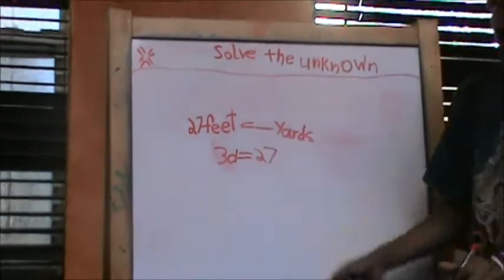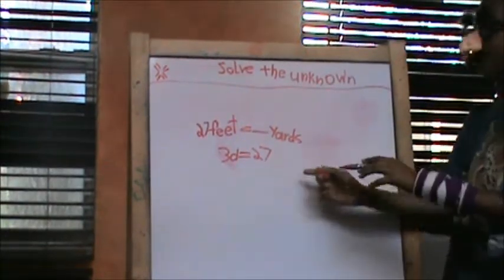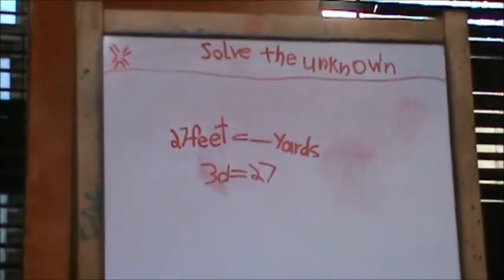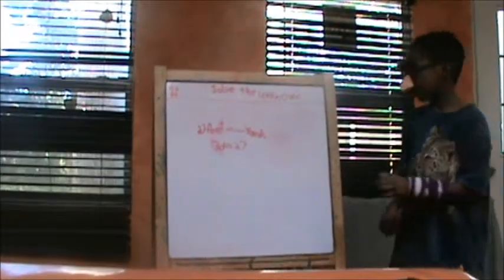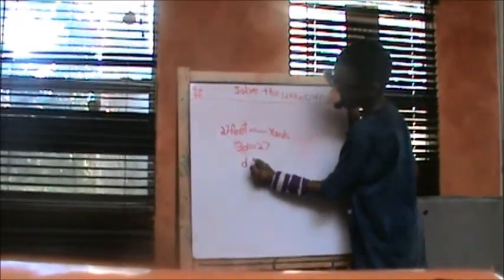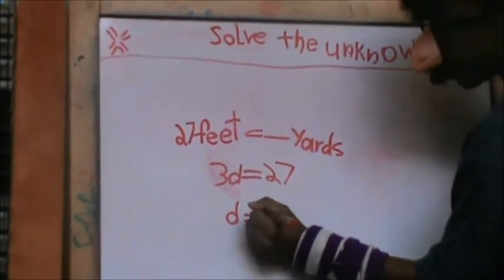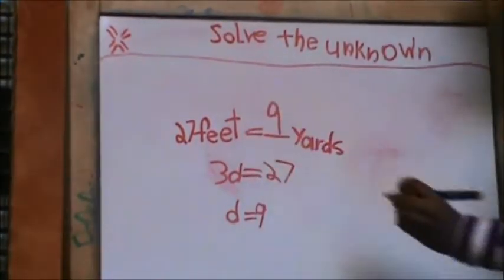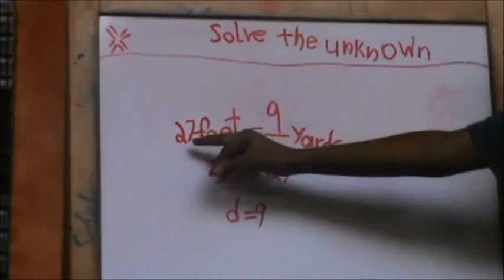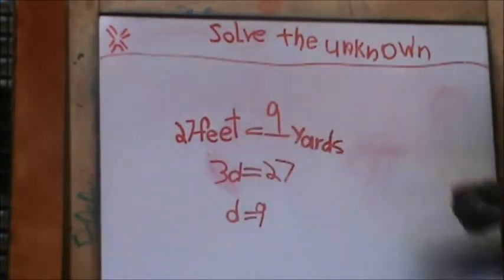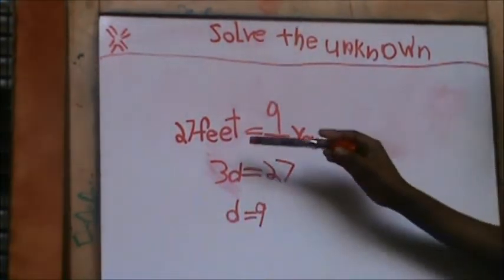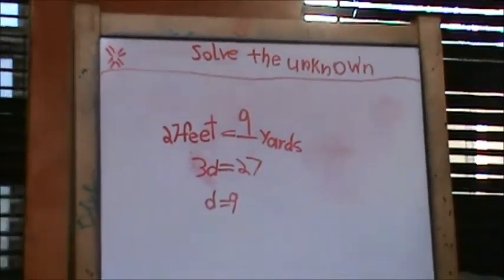So we're going to do three times Z equals 27. We're going to think: what times three equals 27? And the answer will be nine. So we're going to put Z equals nine, and then put a nine right here. So Z equals nine — meaning 27 feet equals nine yards. It's another way of saying nine times three equals 27. Awesome. Let's try another one. Erase that.